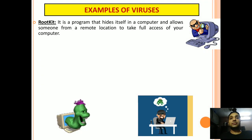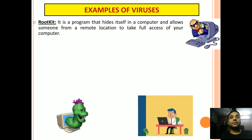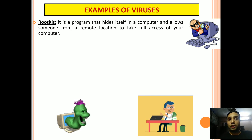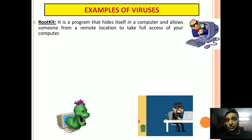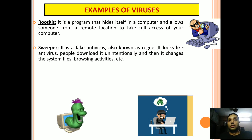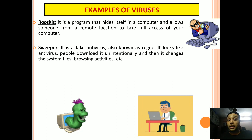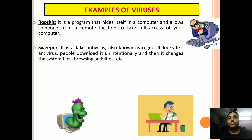The next example of virus is Rootkit. It is a program that hides itself in a computer and allows someone from a remote location to take full access to your computer. So don't share your information with unknown persons. Sweeper is a fake antivirus, also known as Rogue. It looks like an antivirus; people download it unintentionally, and then it changes the system files, browsing activities, etc.